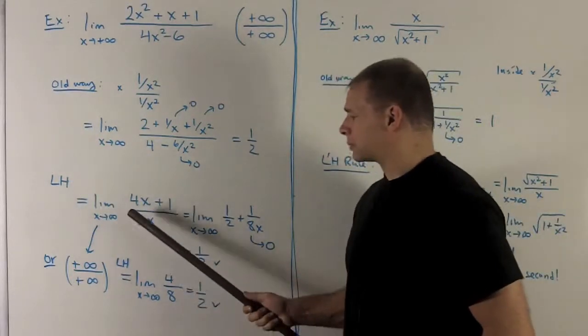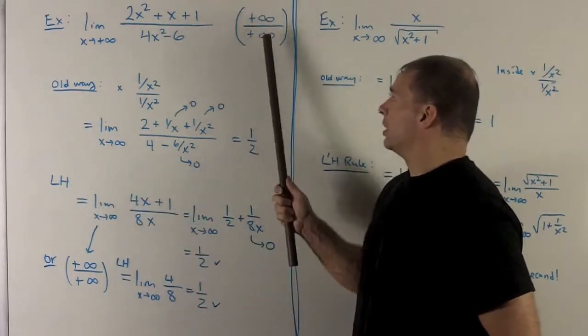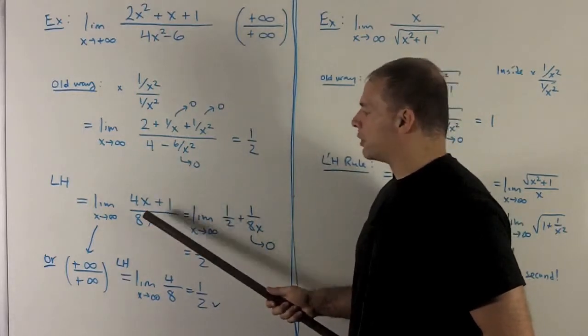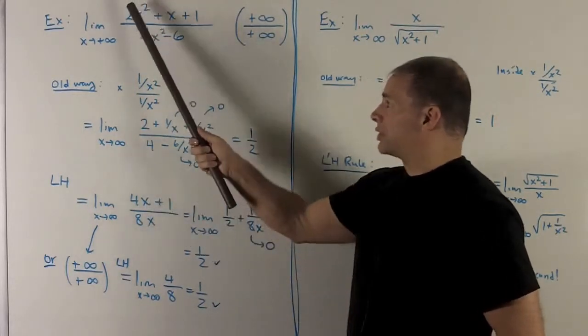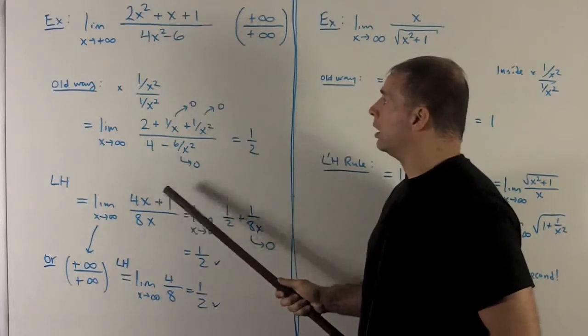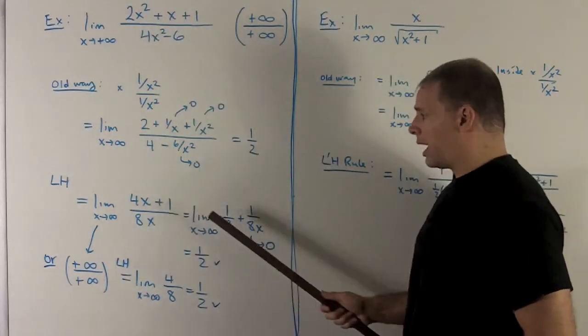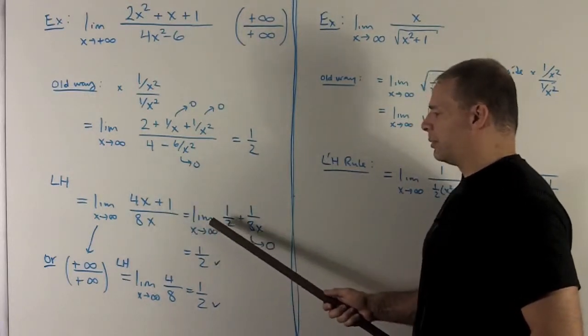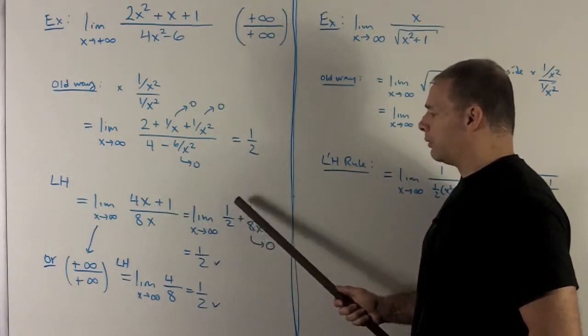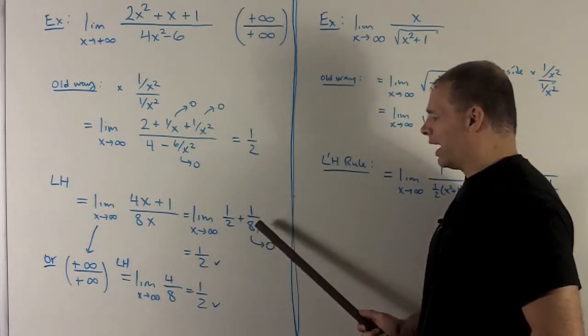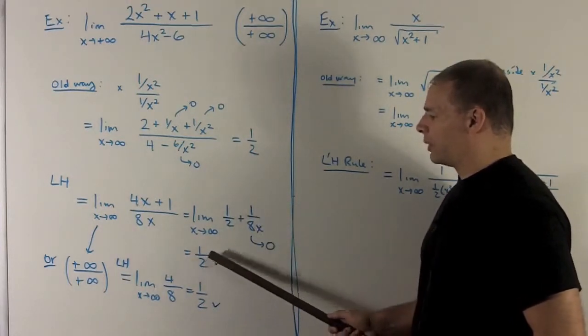With L'Hopital's rule, what do we do? It's an indeterminate form, so I can take the derivative of the top over the derivative of the bottom. So that's going to give me a 4x plus 1 over 8x. We note, I can divide 8x into each term, so it's going to give me my limit of 1 half plus 1 over 8x. And then 1 over 8x is going to go to 0, so I'm left with a half.